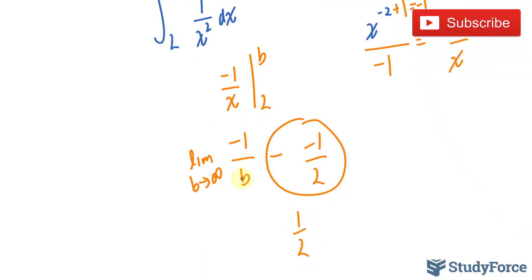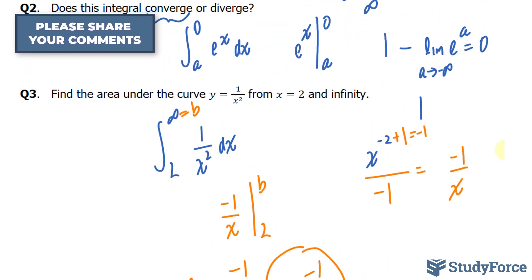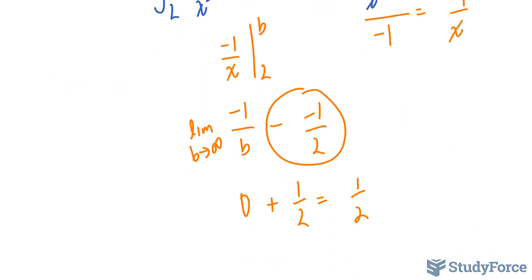And placing infinity into here, negative 1 over infinity, negative 1 over a very large number, or think of a trillion, will give you 0. So 0 plus half, the area underneath this curve, between 2 and infinity, is half.